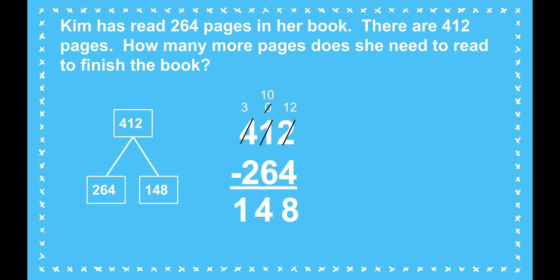I need to check to see if my answer is reasonable. 148 is reasonable — if Kim has read part of them, 148 is less than the total, so I know that's a reasonable answer. If this answer were greater than 412, I would know I had done something wrong, because it is impossible to have more pages left to read than are in the book in the first place. As a mathematician, I want to check to make sure my work is precise.